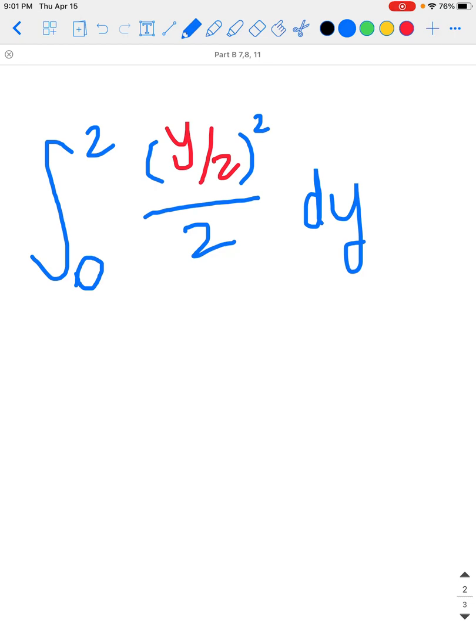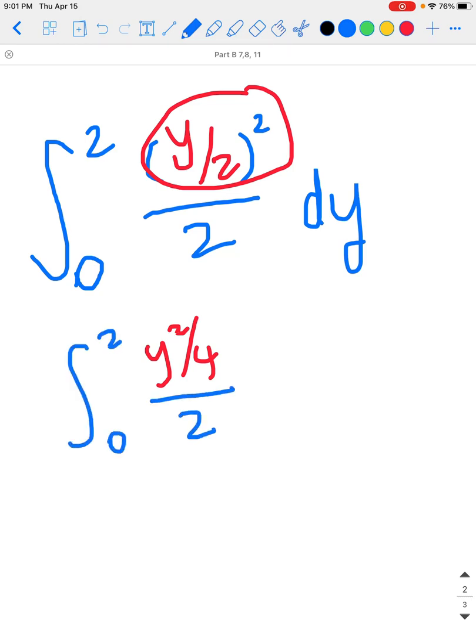If you do y over 2 and square that, you end up with y squared over 4. That's this portion right here. Then that whole thing is divided by 2, and we integrate from 0 to 2. Since it's divided by 4 then by 2, that's equivalent to y squared over 8, evaluating from 0 to 2.